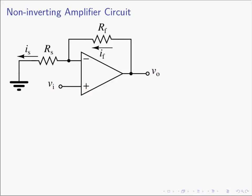So what do we know about op-amps? All op-amps are designed such that they have very little, effectively zero, current that goes in the input. That's just the way they're designed, with a really large input resistance, so there's no current flowing in the inputs. We also know that the voltage at the output of the op-amp is a really big version of V-plus minus V-minus — the output voltage is a really large version of the input voltage difference.